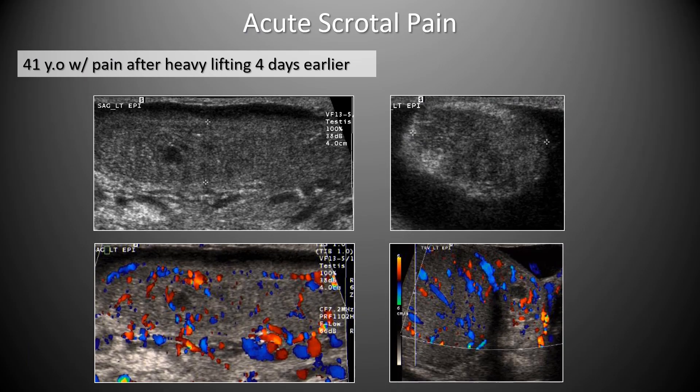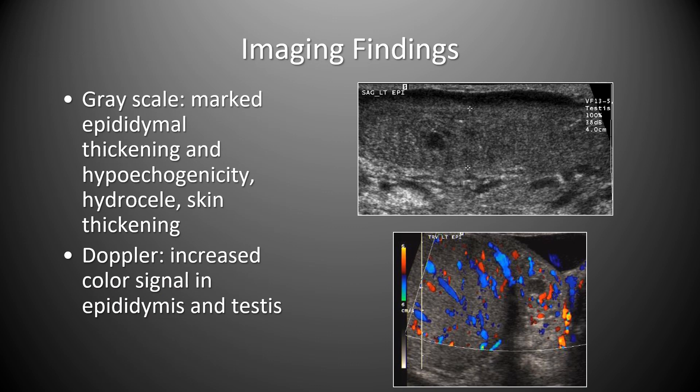A 41-year-old with pain after heavy lifting four days earlier showed marked epididymal thickening with hypoechogenicity and overlying skin thickening with a small hydrocele on grayscale ultrasound. On Doppler, there was increased color signal within both the epididymis and testis, consistent with epididymo-orchitis.